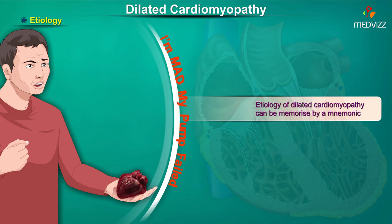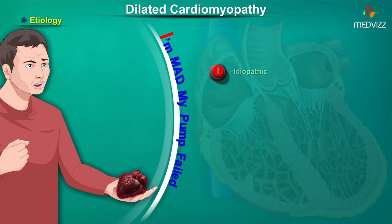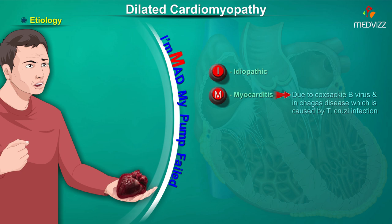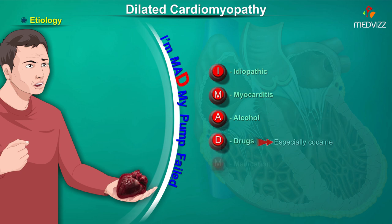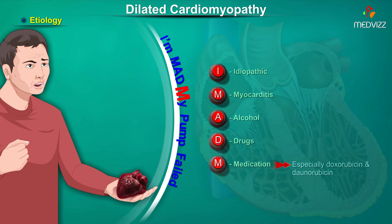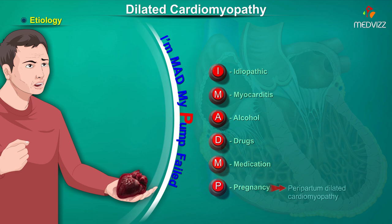The etiology of dilated cardiomyopathy can be memorized by the mnemonic 'I AM MAD MY PUMP FAILED.' I stands for idiopathic, which is the most common cause. M stands for myocarditis, secondary to Coxsackie type B virus or Chagas disease caused by Trypanosoma cruzi infection. A stands for alcohol, where excessive consumption leads to acetaldehyde metabolite toxicity and/or thiamine deficiency. D stands for drugs, especially cocaine. M stands for medication, especially doxorubicin and daunorubicin. P stands for pregnancy.